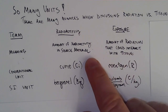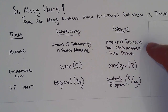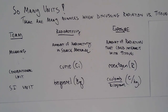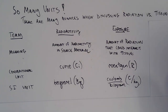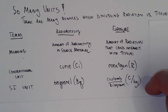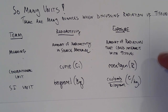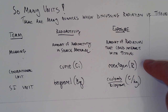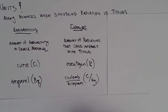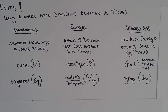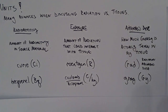Next is exposure. Radioactivity is how much is in the material itself, but exposure is how much of that could actually interact with whatever target tissue we're interested in — a percentage of the radioactivity emitted from the object. Your exposure depends on your cross-sectional area, distance from the source, and other factors. The units here are Rentgens or coulombs per kilogram.